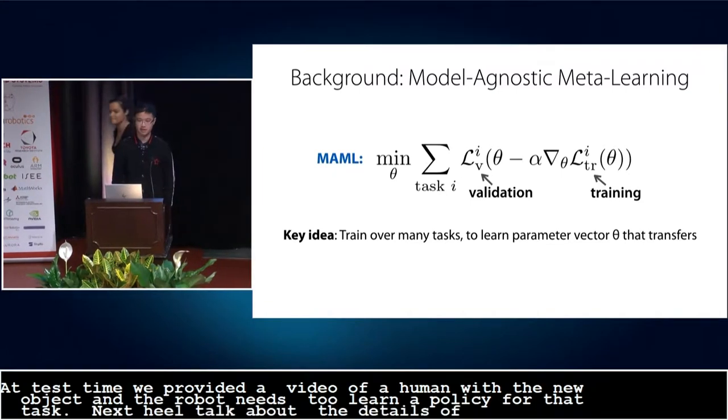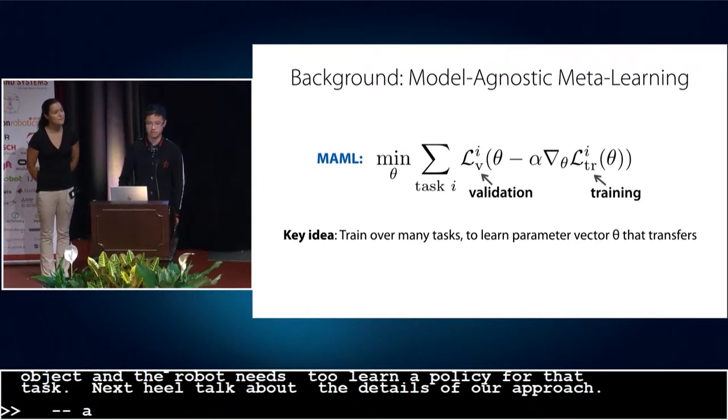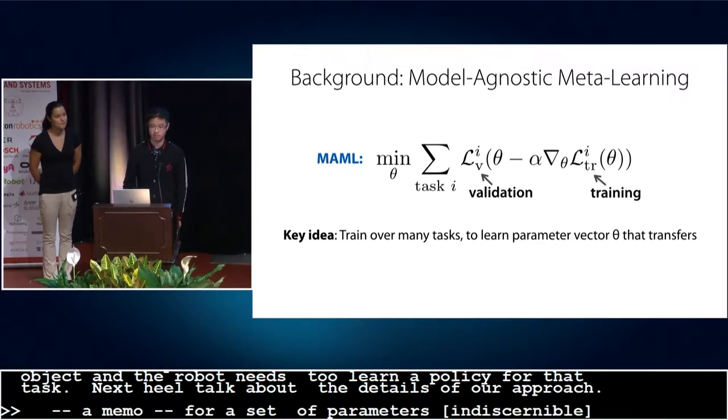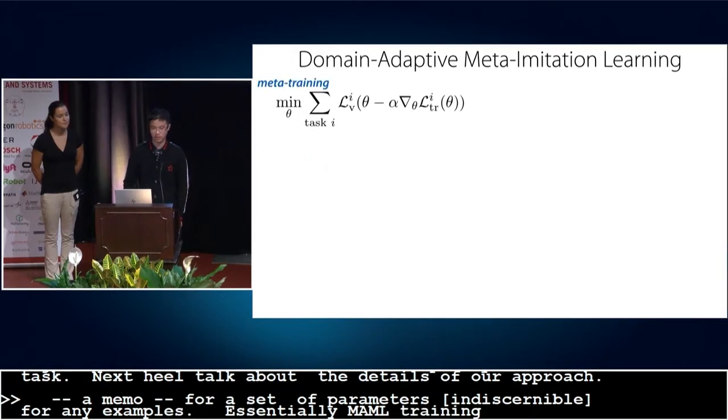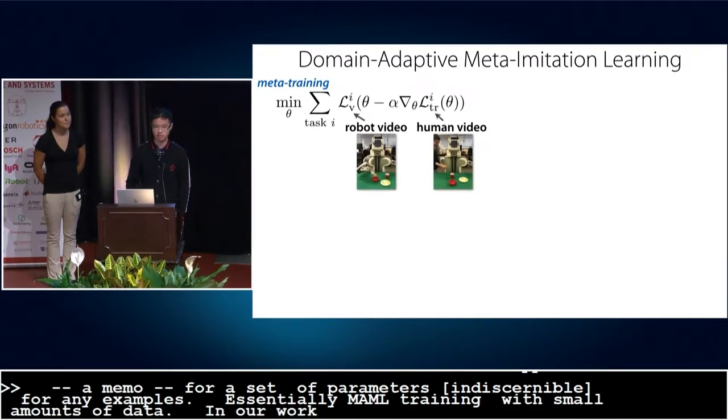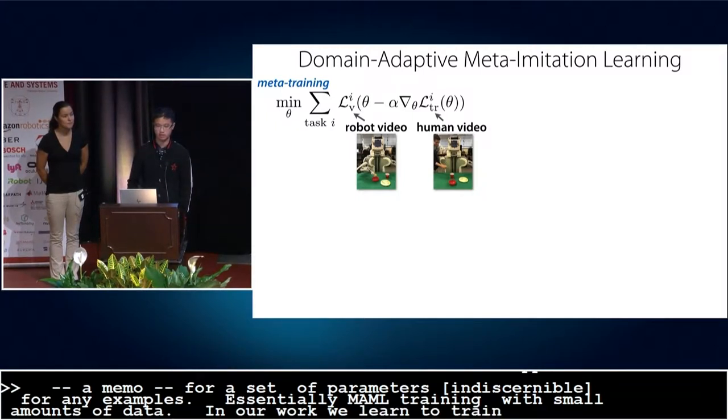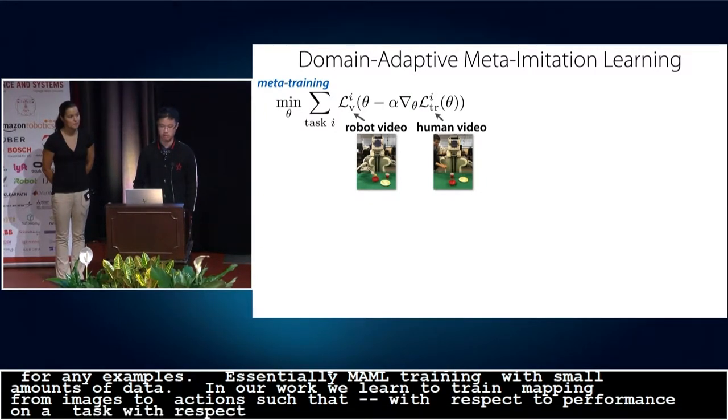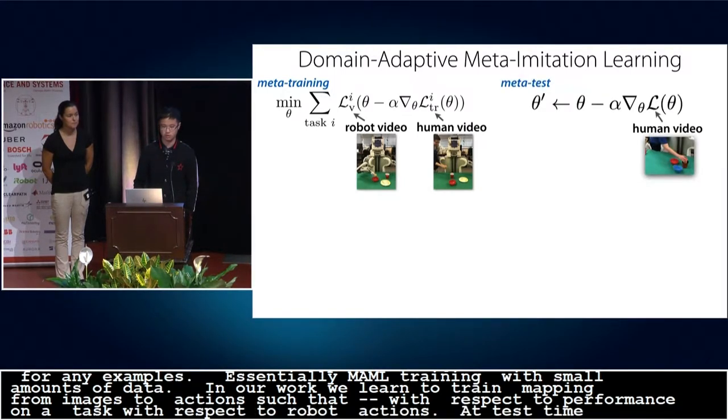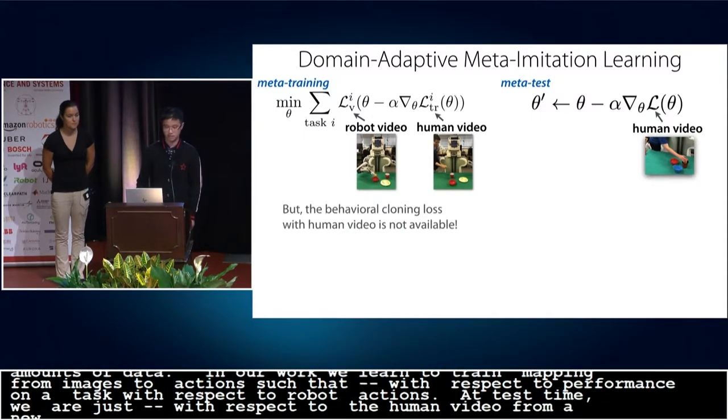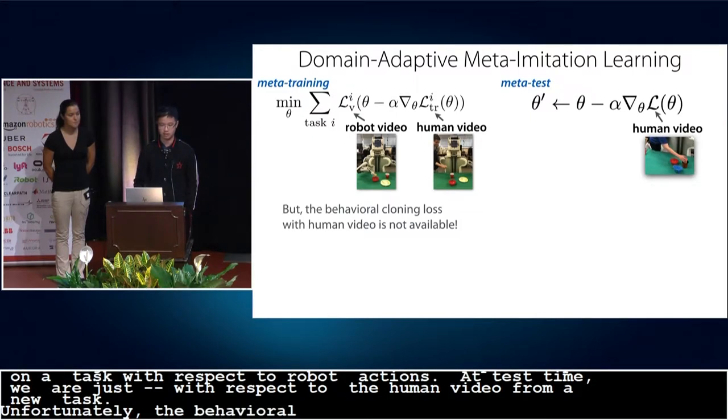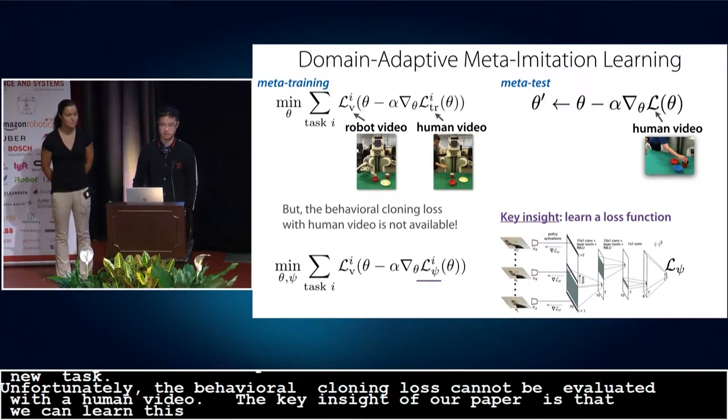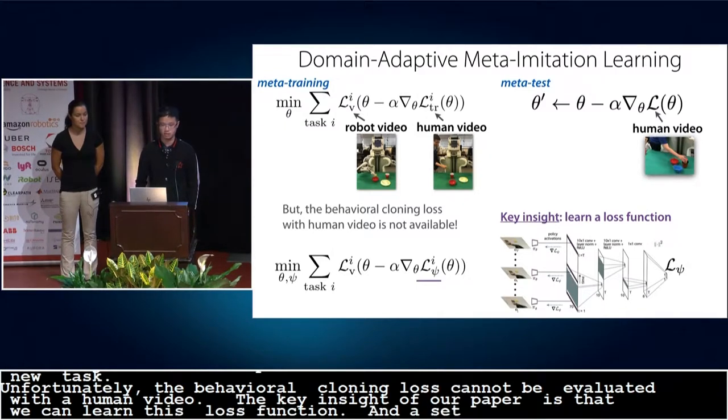Okay. We build upon Model-Agnostic Meta-Learning, or MAML, which optimizes for a set of parameters such that after a small number of gradient descent steps, the model can generalize to new examples. Essentially, MAML trains for transferability to many different tasks with a small amount of data. In our work, we aim to train a neural network parameterized by theta and mapping from images to robot actions such that running gradient descent with respect to human videos can lead to effective performance on a task with respect to robot demonstrations. The loss function here is a simple behavior cloning loss. At test time, we will just run gradient descent with respect to a human video from a new task. Unfortunately, the behavior cloning loss cannot be evaluated with a human video. The key insight of our paper is that we can learn this loss function. So we will both learn a loss function and a set of initial parameters such that after watching a human demonstration, the robot can perform this task very well. Next, we will show some experimental results.